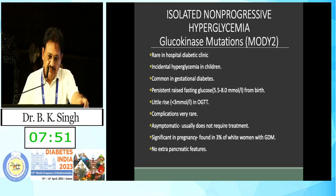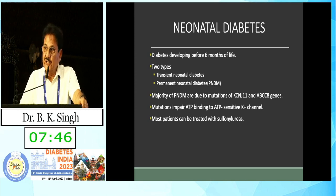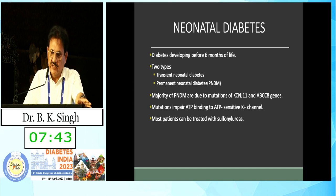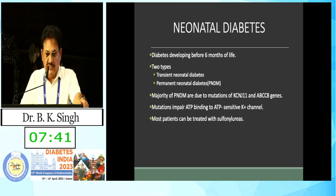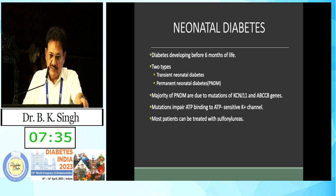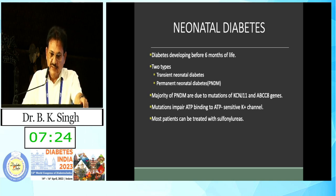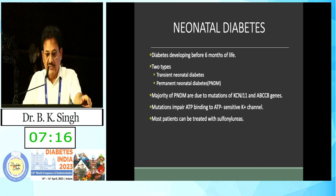There are no extra-pancreatic features in MODY2. The third important form of monogenic diabetes is neonatal diabetes. The majority of permanent neonatal diabetes mellitus cases are due to mutations in KCNJ11 and ABCC8 regions. These mutations impair ATP binding of the ATP-sensitive potassium channel, and most patients can be treated with sulfonylurea.